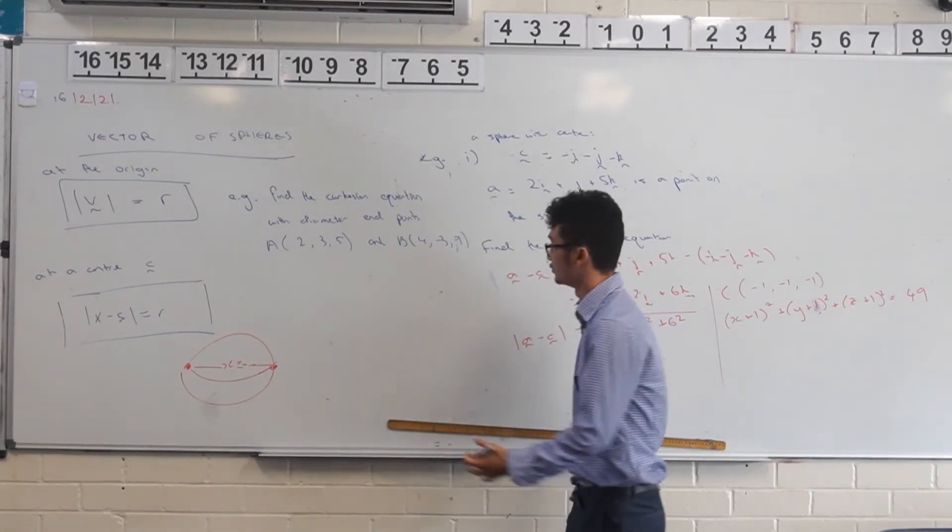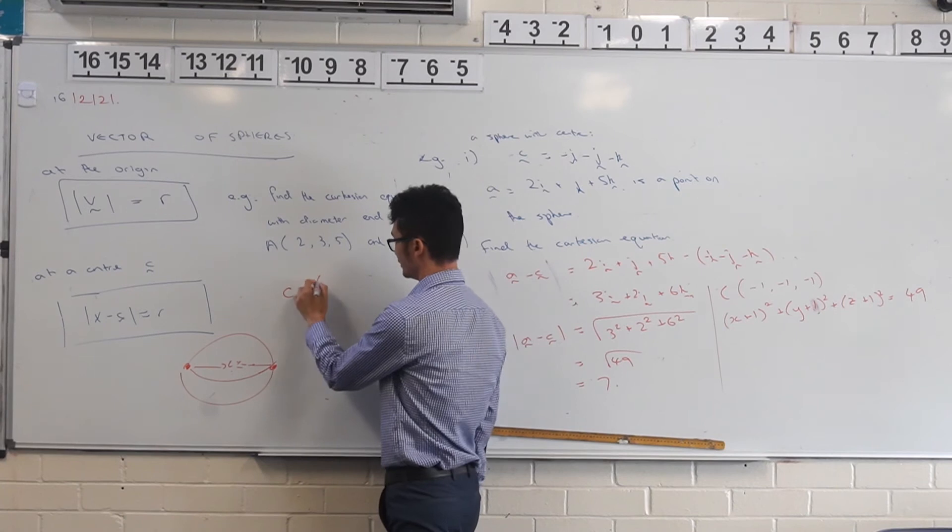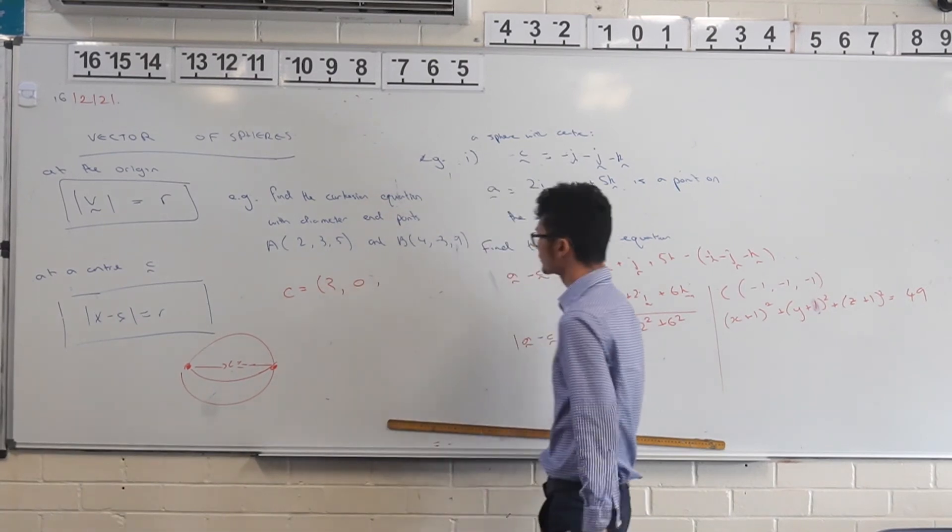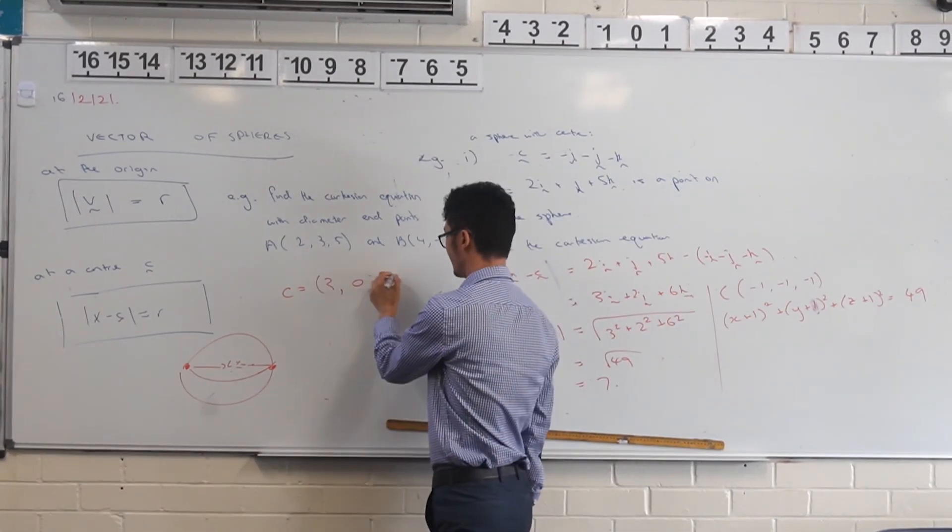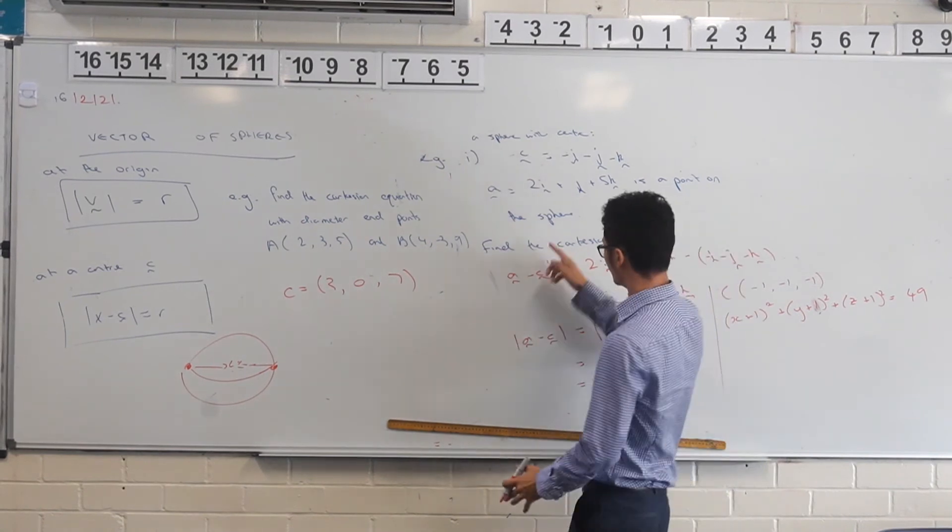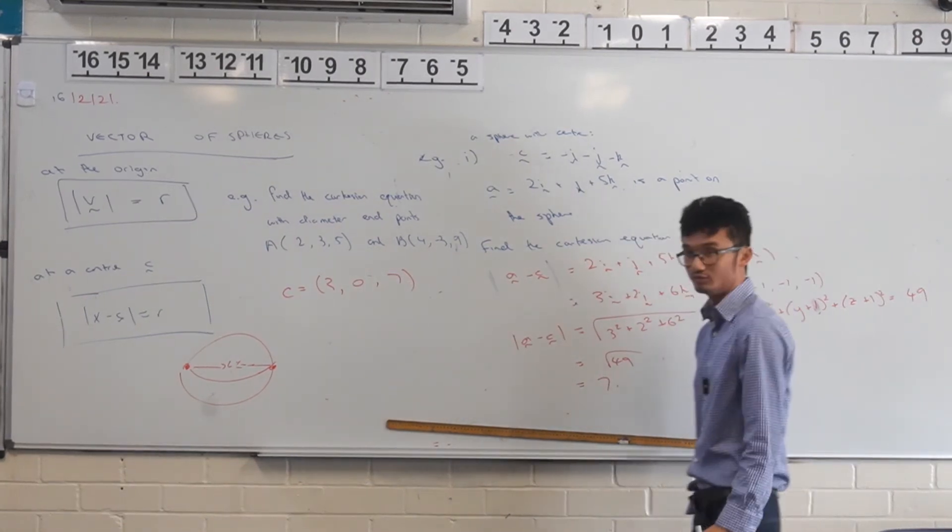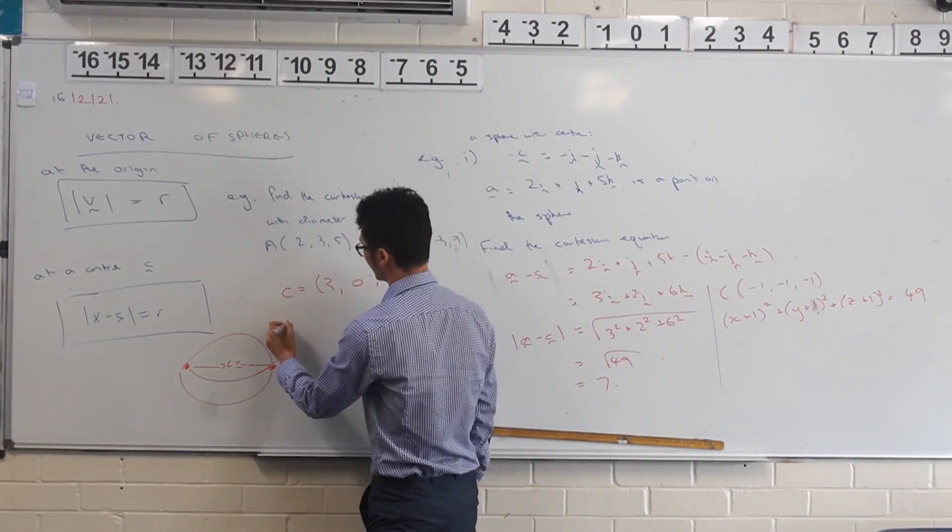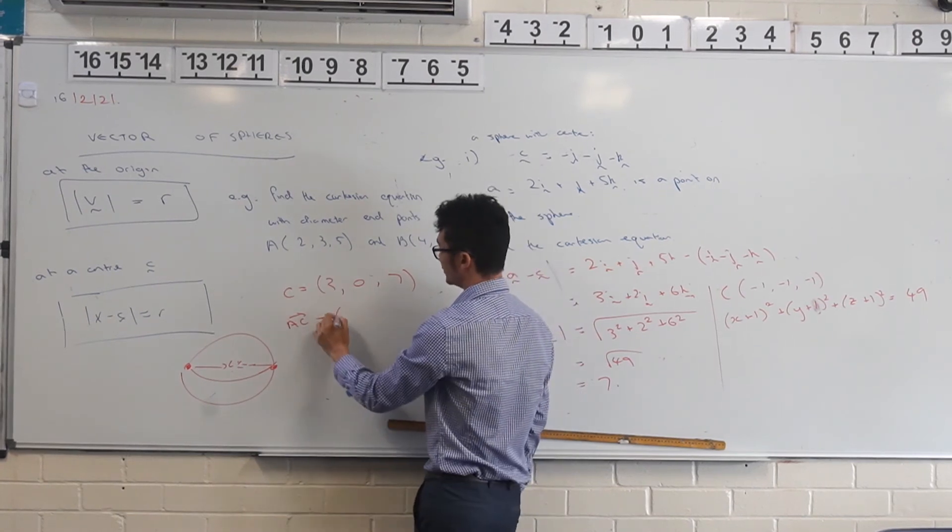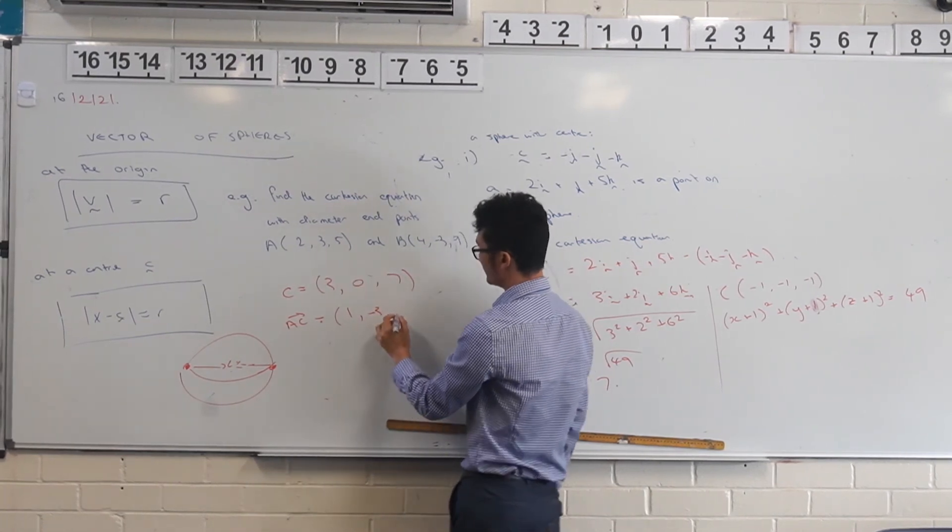It just needs to be the midpoint of those. So the center can be, well, 2 + 4 divided by 2, so that's 6 divided by 2 which is 3. I've got 3 + negative 3 divided by 2, that's just going to be 0. And then 5 + 9 is 14 divided by 2 is 7. So there's my center. And so once I've done that, so now I can actually find the Cartesian equation by using the same idea. So I can take A minus C or I can actually take B minus C as well, it doesn't really matter. It should be the same either way. So if I take the vector AC, let's say, that's going to be equal to 3 - 2, that's 1, 0 - 3 is negative 3, 7 - 5 is negative 2.